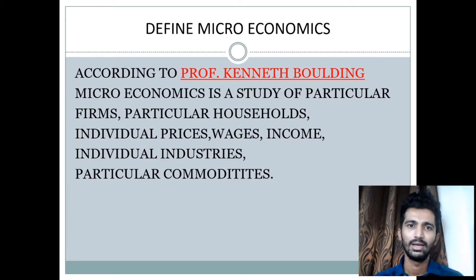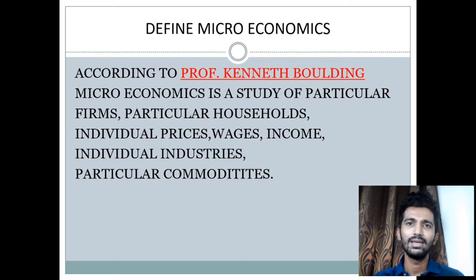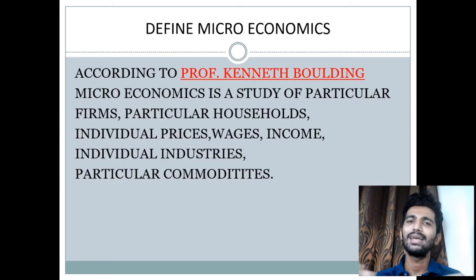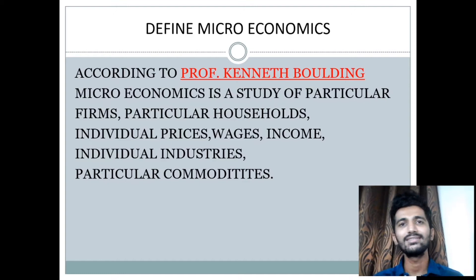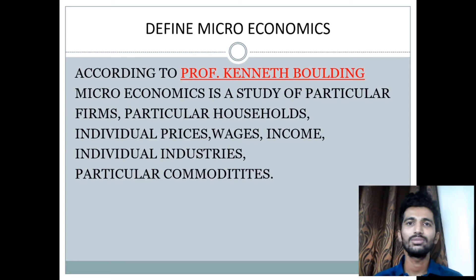This definition clearly states that microeconomics is about the individual. It is about particular products and particular industries. There are many firms in the economy but microeconomics studies only particular firms and particular households. It studies individual industries out of the industrial sector and analyzes them minutely. There are many commodities in the market but microeconomic study helps us in analyzing particular commodities. So the definition by Professor Kenneth Boulding says: microeconomics is a study of particular firms, particular households, individual prices, wages, income, individual industries, and particular commodities.